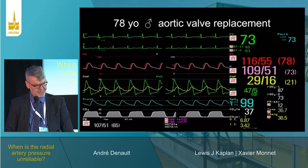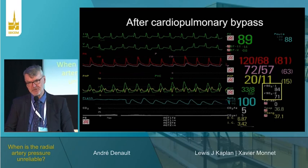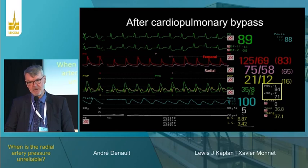This is a 78-year-old man undergoing aortic valve replacement. What you have in red is the femoral artery pressure, in pink the radial artery pressure. Brain saturation is shown here. After cardiopulmonary bypass, brain saturation is completely normal, but you can see a significant gradient between the radial and the femoral artery pressure.